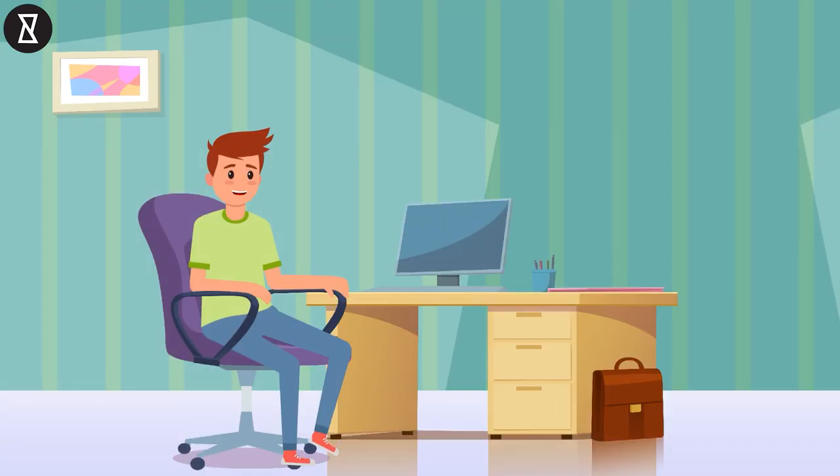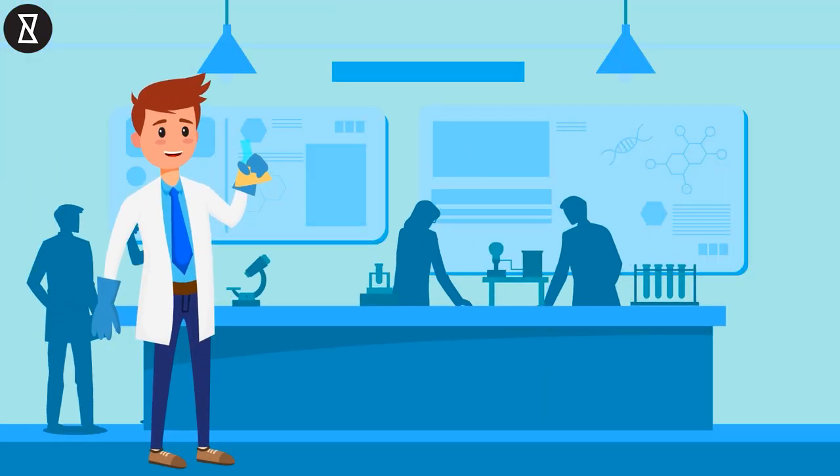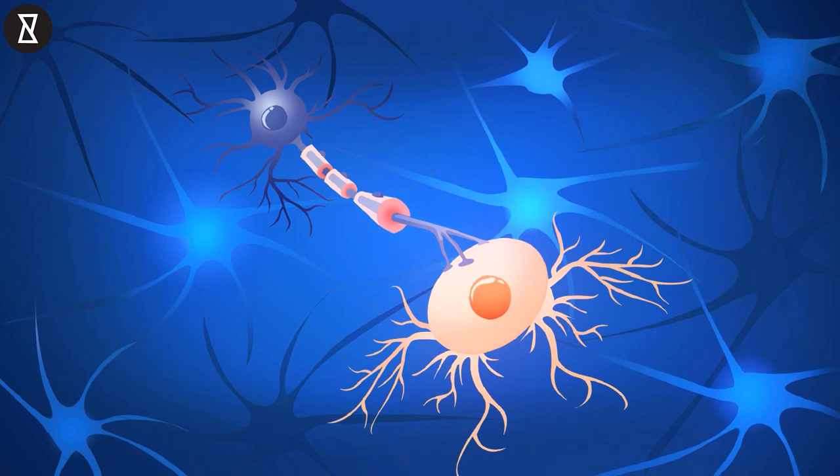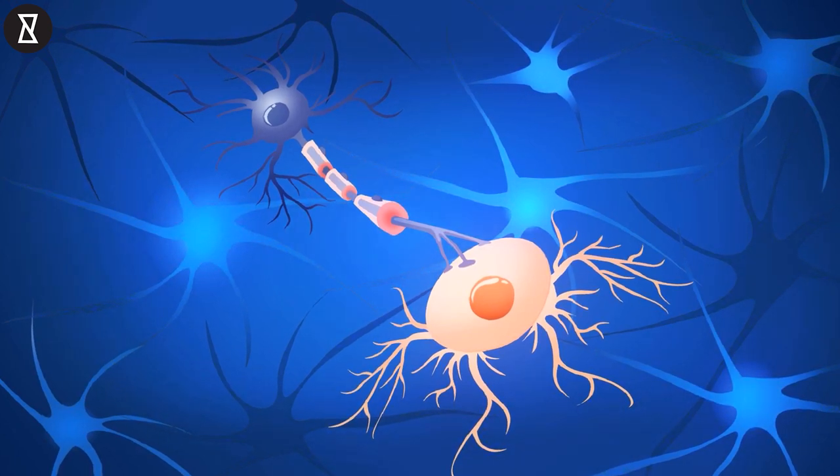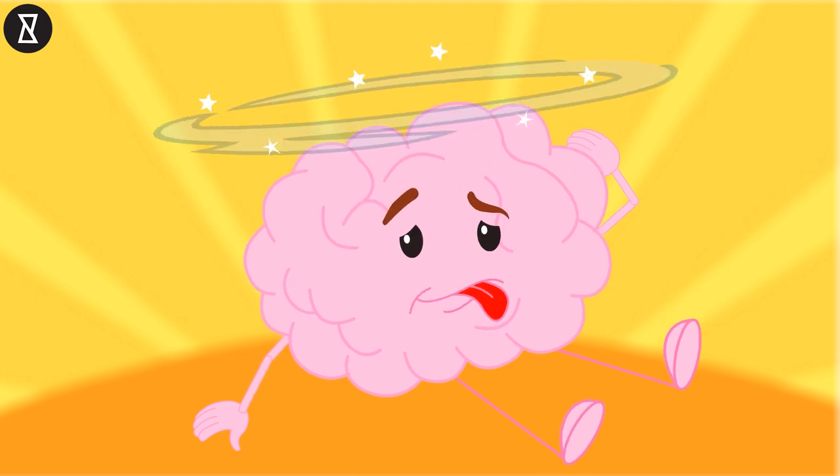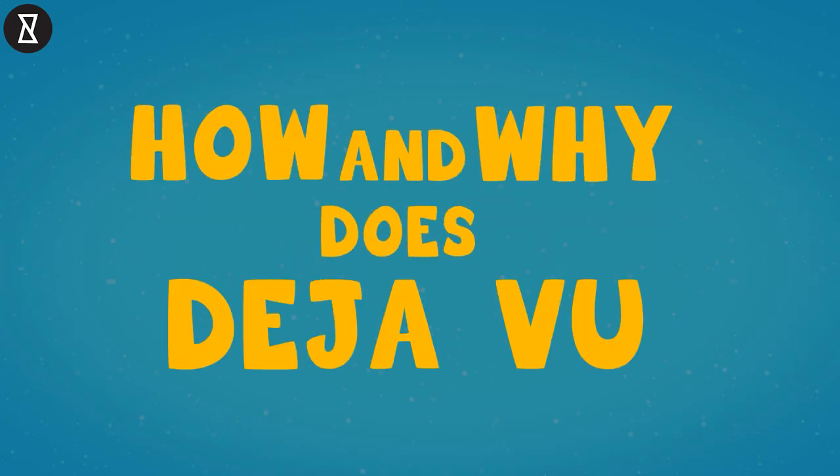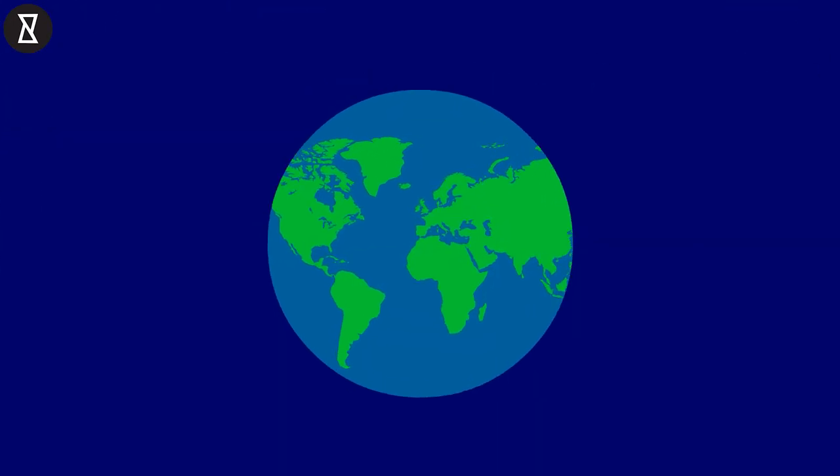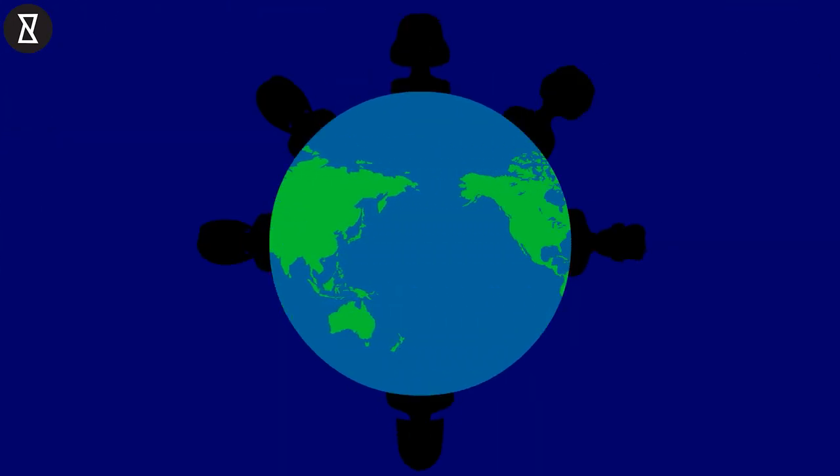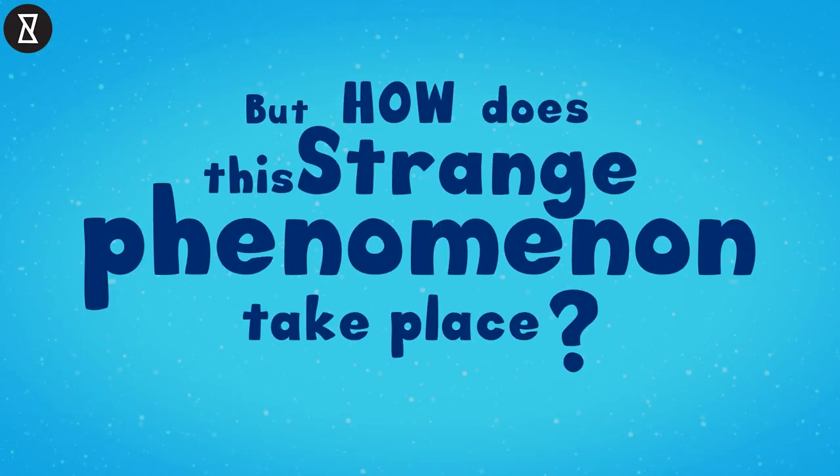Although some interpret déjà vu in a paranormal context, like experiences from past lives, scientists and psychologists explain it as a momentary misfiring of neurons in the brain, which creates false connections. One idea is that déjà vu is a sort of brain twitch. How and why does déjà vu happen? Almost 60 to 80 percent of the Earth's population has experienced a feeling of déjà vu. But how does this strange phenomenon take place?